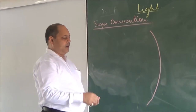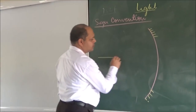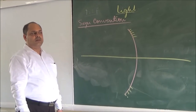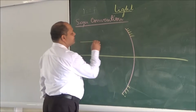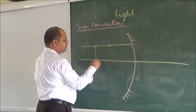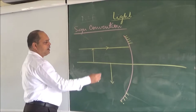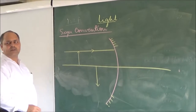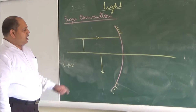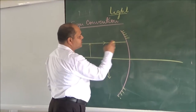If this is the mirror, this is the pole, and this is the principal axis. Light ray travels from left to right. The object is here and the image is here. In that situation, this side is taken as negative — this is the negative distance. It means the object is always placed on the left-hand side.